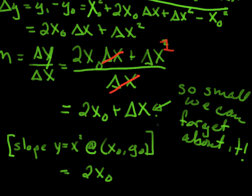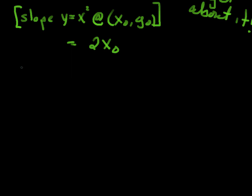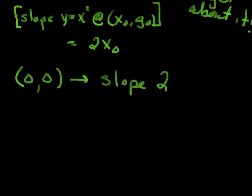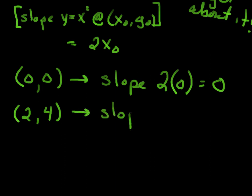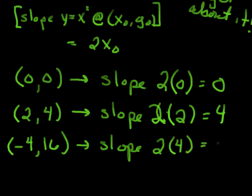We should have different slopes at different points. At the point (0, 0), the slope is 2 times 0, which is 0. At the point (2, 4), the slope of the curve is 2 times 2, which is 4. Or at the point (-4, 16), the slope is 2 times -4, which is -8.